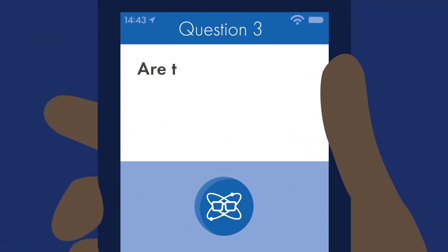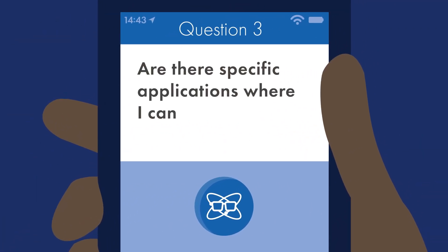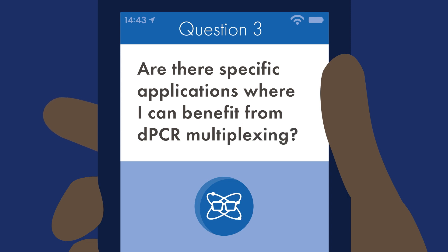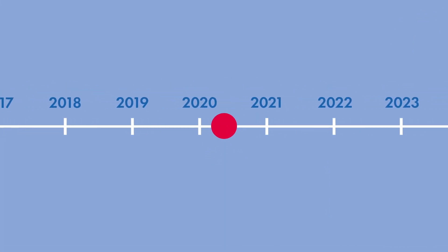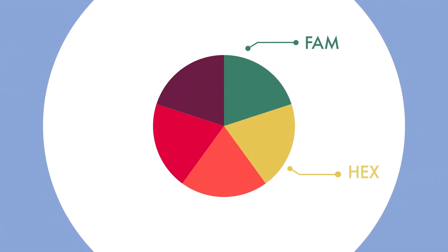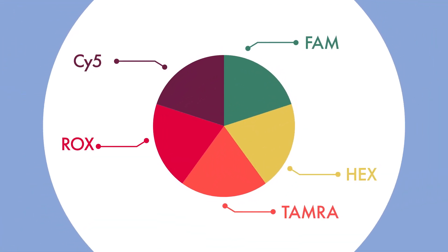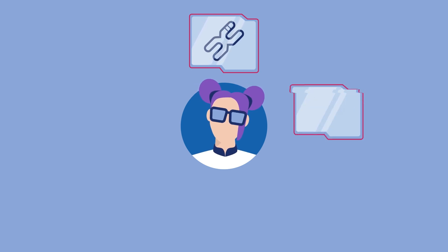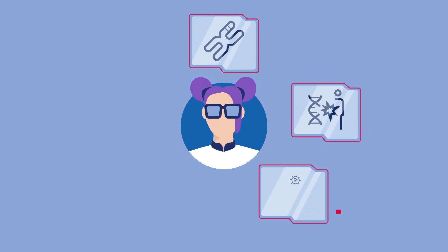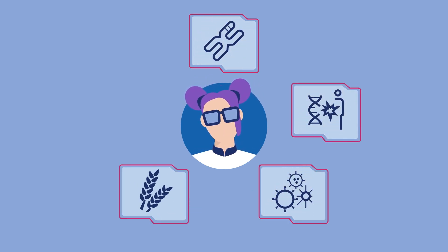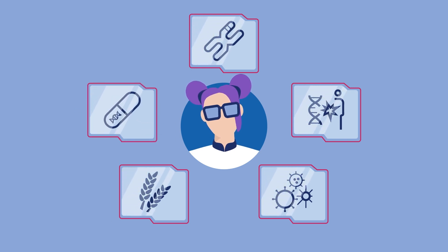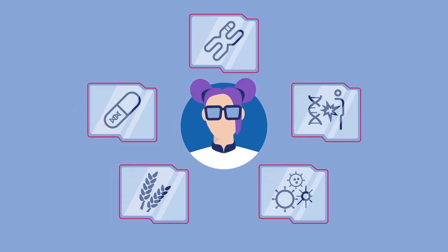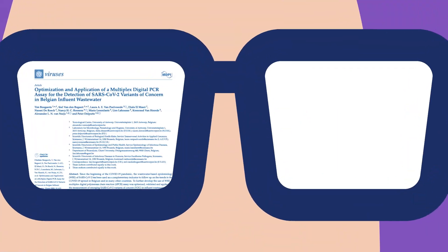And now, on to your last question: Are there specific applications where I can benefit from dPCR multiplexing? In 2020, KaiaQiD was introduced as the first five-plex dPCR instrument, outcompeting other dPCR instruments by at least two more colors. Multiplexing in applications such as CNV analysis, mutation detection, microbial detection, food testing and biopharma manufacturing has now been made possible thanks to the multiplex dPCR assays from KaiaQiD.